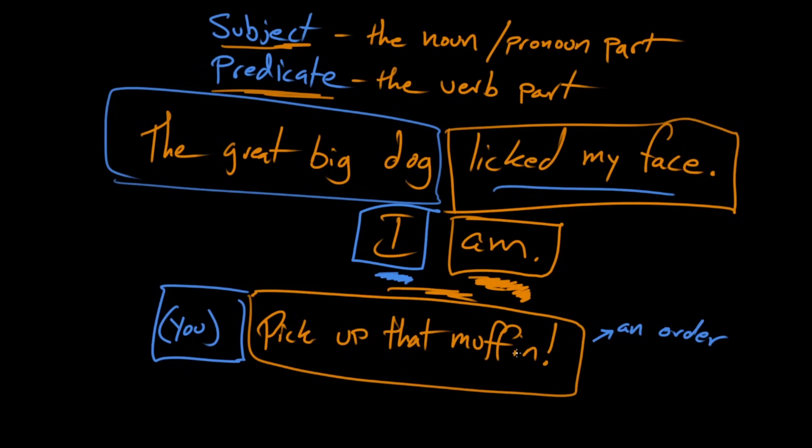So a sentence is a grammatically complete idea or expression. And it has to have a noun or pronoun part, which we call the subject. And it has to have a verb and all its baggage part, which is what we call the predicate. And sometimes that subject can sort of be implied or invisible, as in the command pick up that muffin. Right.